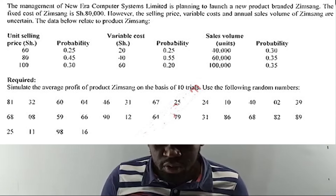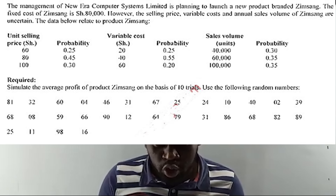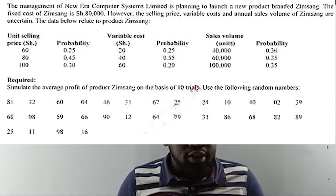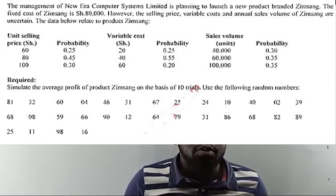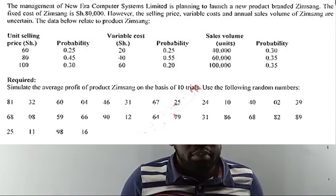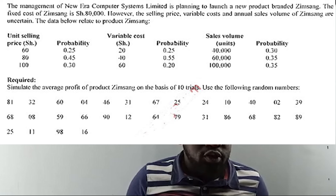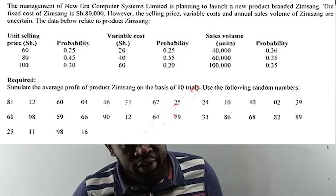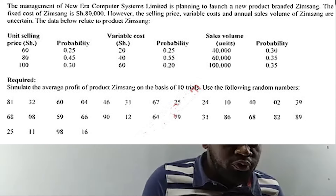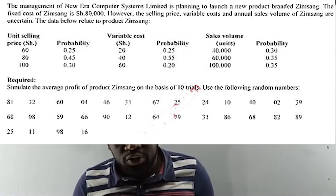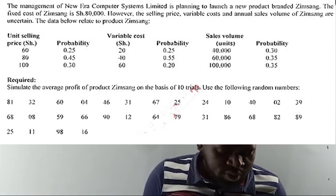We are given random numbers to use. Simulation is like a trial and error method — that's why the question asks for 10 trials. We need to simulate the profit of this company, and we need to understand the profit formula to carry out the simulation. The first step in simulation analysis is identifying the variables.